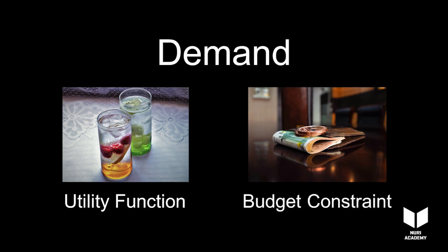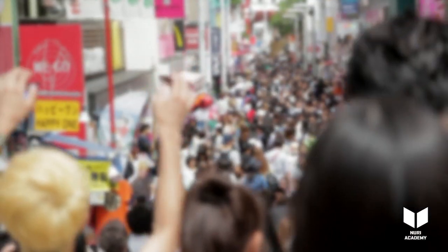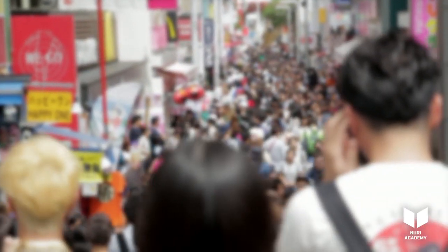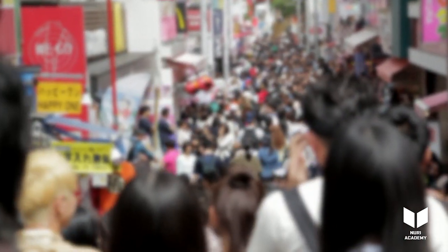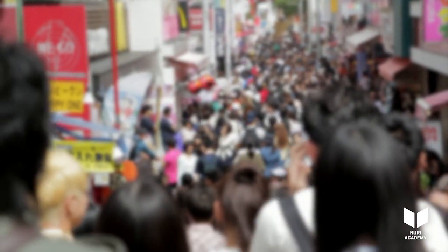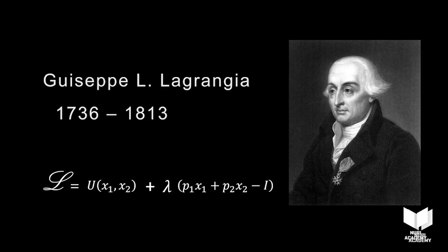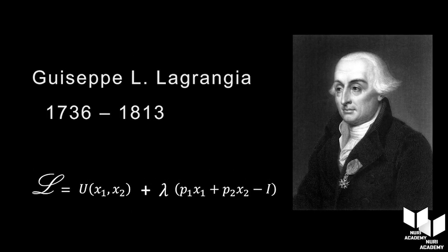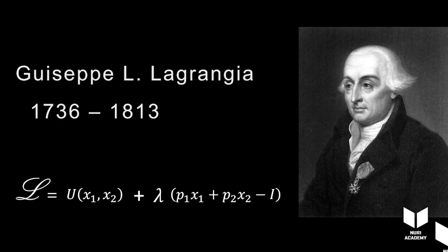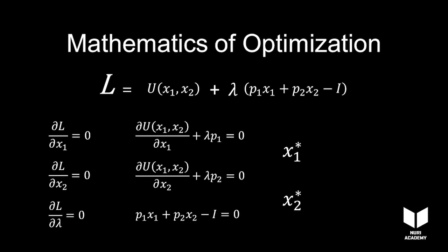The demand function is a function that shows the quantity of a good that gives consumers the highest level of utility and that they can afford. This is the function we learned how to derive in the section on constrained optimization and Lagrangian. If prices and income aren't given in the budget constraint — that is, if p1, p2, and I are left as variables — the outcome of your constrained optimization problem would be X1 and X2 as functions of p1, p2, and I.